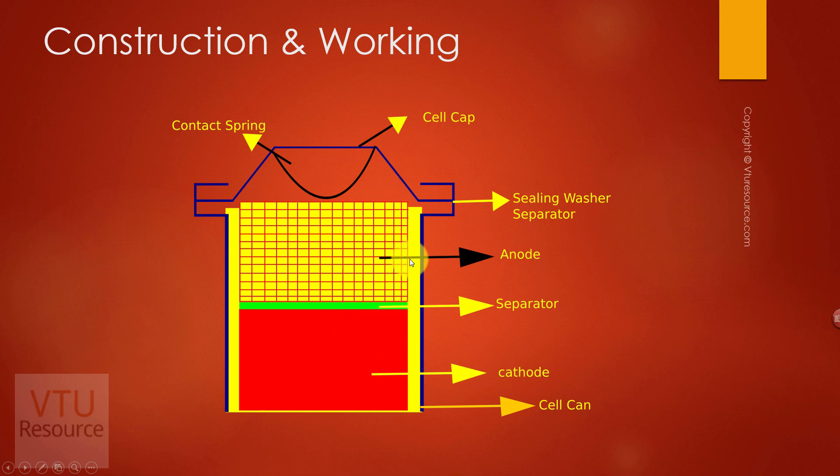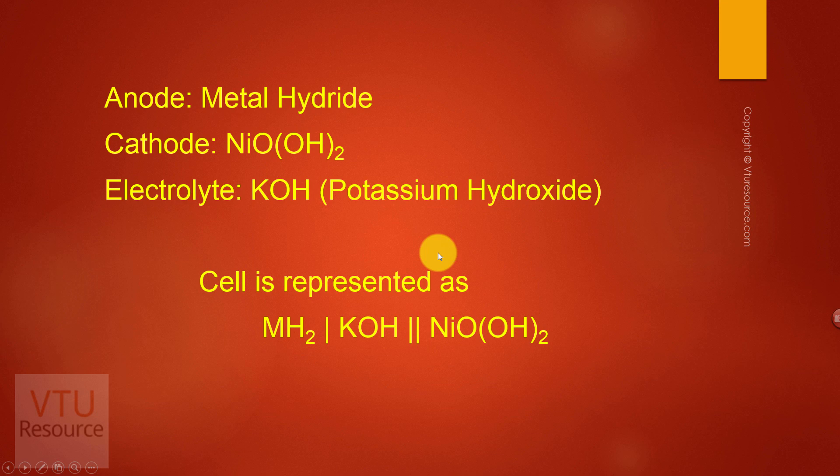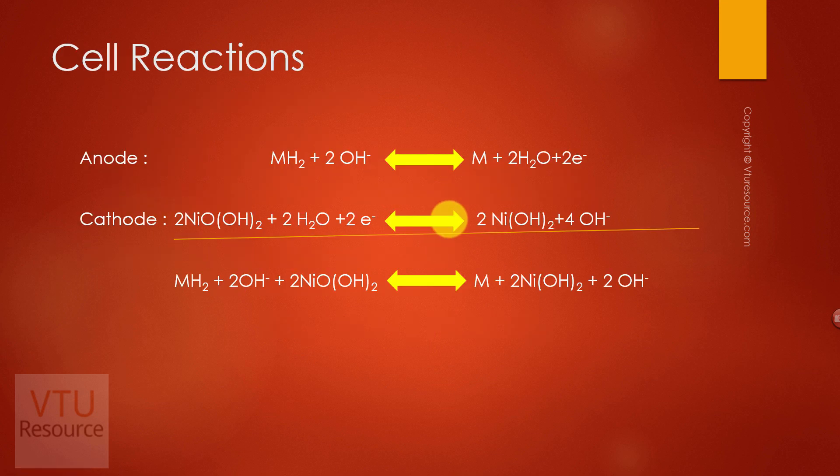Let us discuss the cell reactions. The cell reactions as discussed earlier are reversible reactions. At the anode, the metal hydride undergoes oxidation in presence of electrolyte to give the respective metal, water, and electrons.